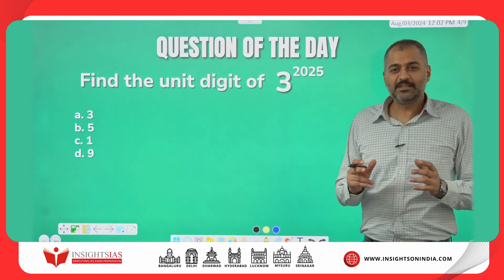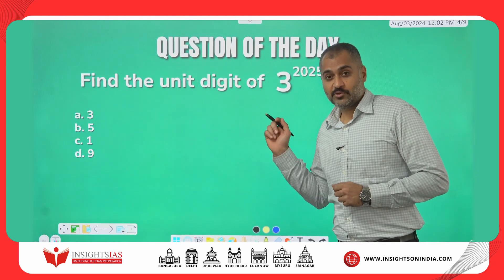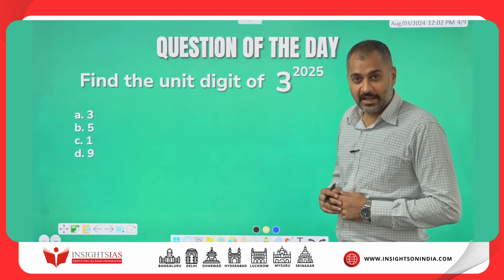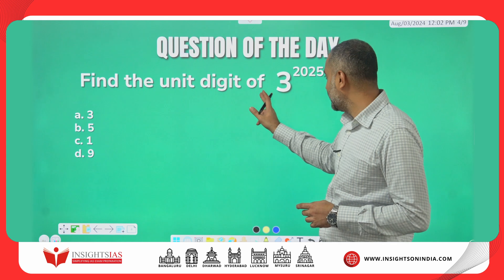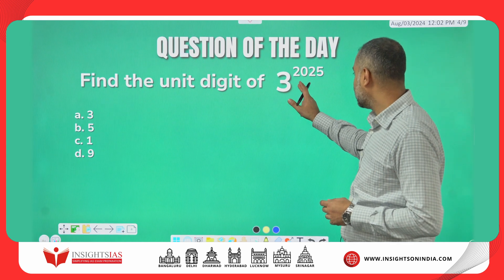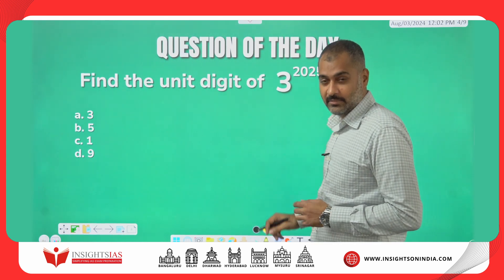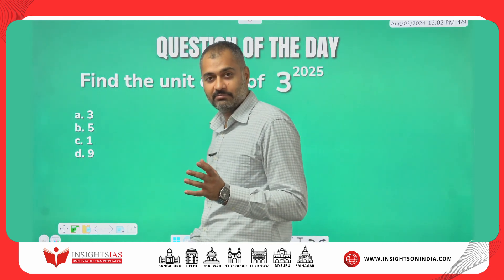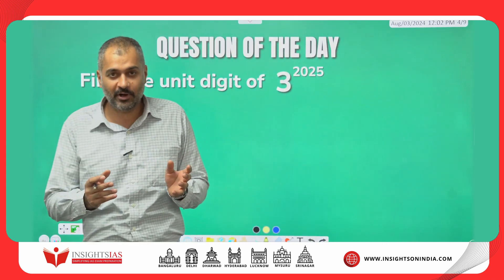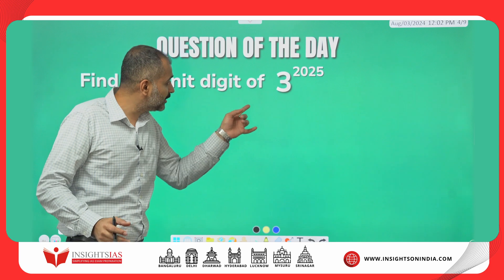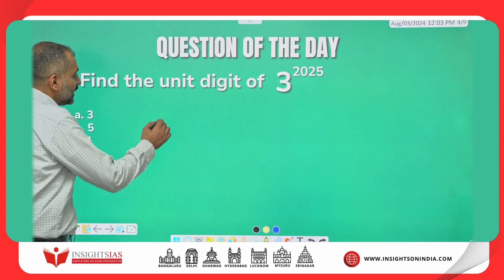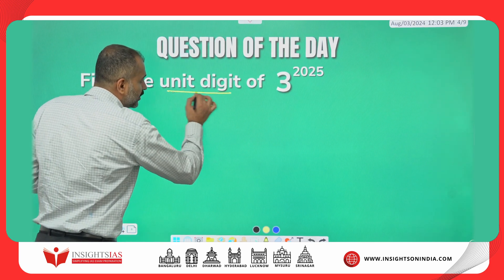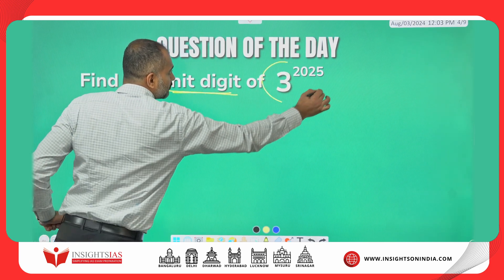And guys, this is today's question of the day — find the unit digit of 3 power 2025. It is a big number, but you are not asked to give that particular number — just the unit digit of this number.